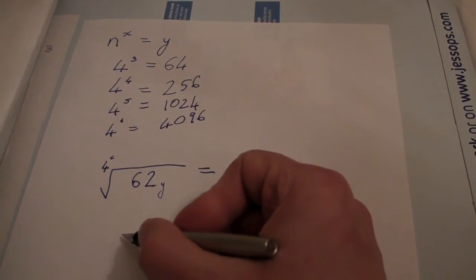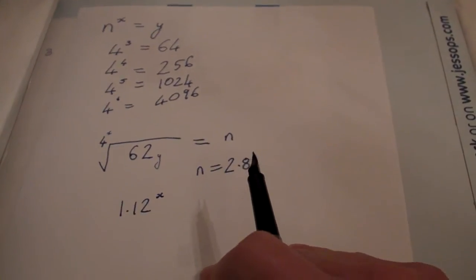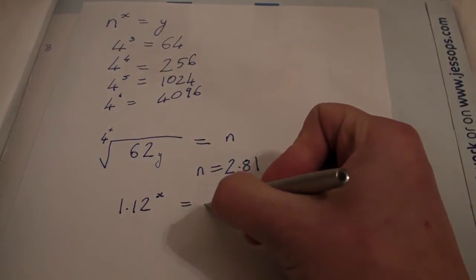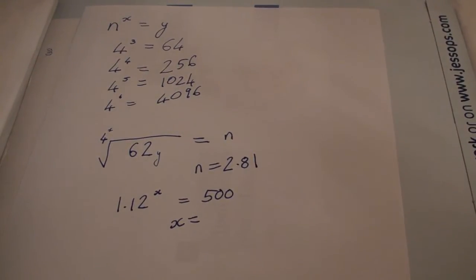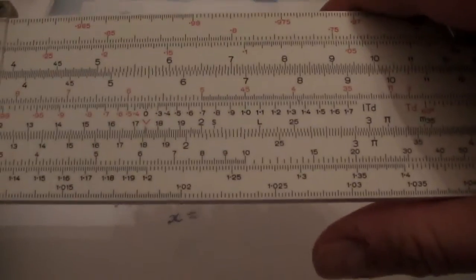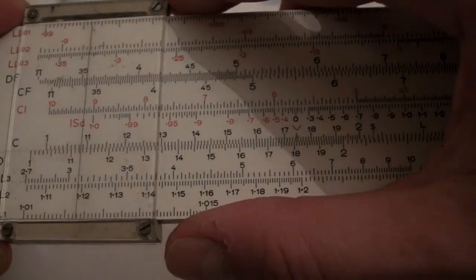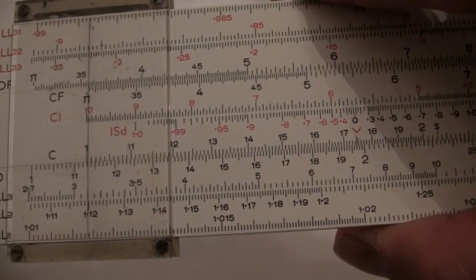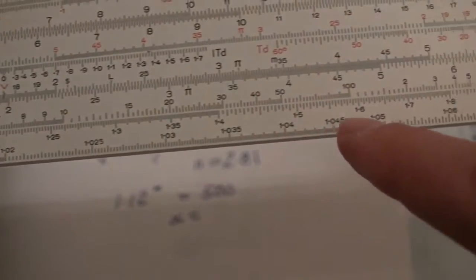Do that the other way as well. If we want to know 1.12 to the x if that's equal to 500, what is x equal to? So we know our starting point this time is 1.12. We can find that on LL2. 1.12. Line up our 1 with that.